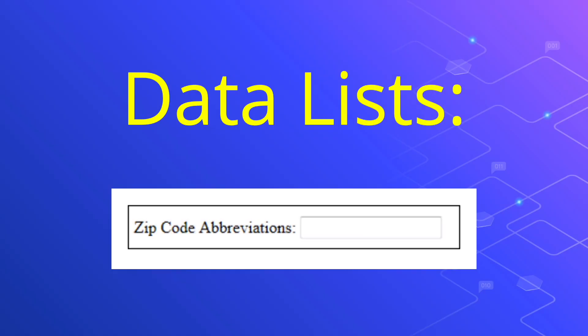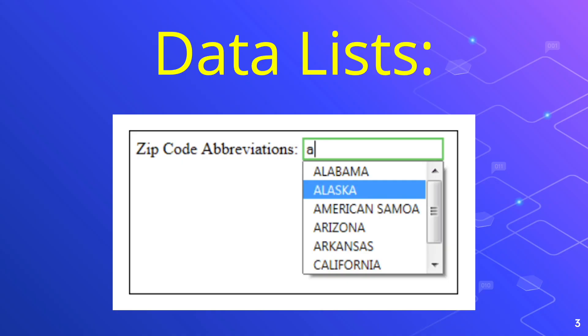Another type of list we can use is a data list. The data list is like a dropdown list of options, only the dropdown part doesn't appear until we start typing. The items on your list then appear, allowing the user to select an item. Here's what it looks like before we start typing. However, when we click inside of the text box and type a letter, you'll see this.